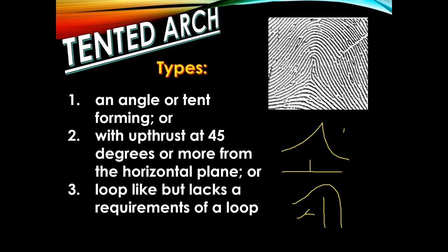The types of a tented arch are: an angle, also known as tent-forming; an upthrust; and a loop-like or looping structure wherein it lacks the requirement of a loop.